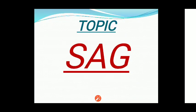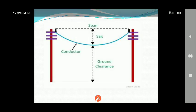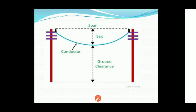Today we will discuss what is sag and the factors affecting sag. As shown in the diagram, there are two poles and in between there is a conductor. The highest point of the line supports and the lowest point of the conductor — the distance between these points, where the conductor is hung in the atmosphere, is what we will examine.